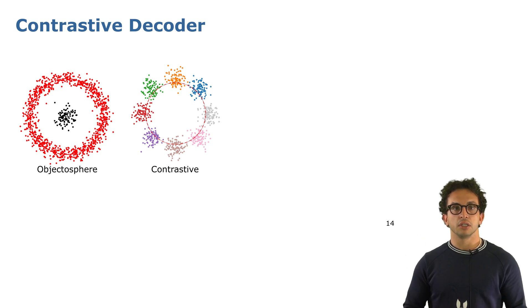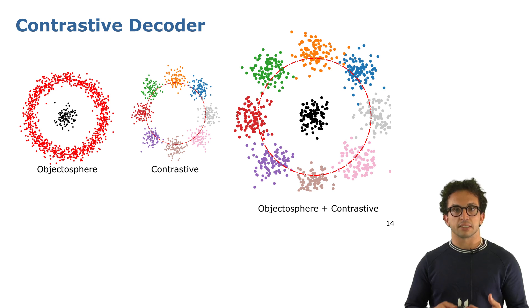When used together, these two loss functions end up like something like this, where we have all the known classes around the circle in small clusters, and the unknown class at the center, close to zero.